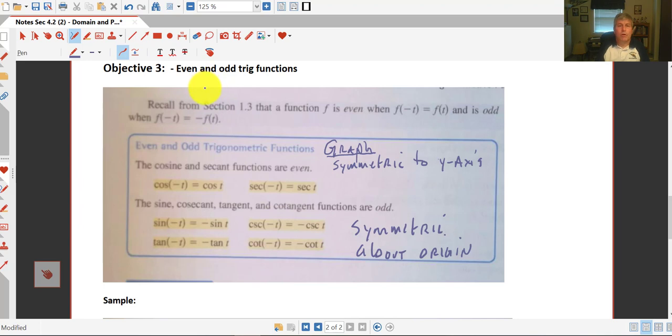Objective 3, we're going to take a look at even and odd trig functions here. And we're just going to give it to you. Just recall that a function is even when f of the opposite of t equals f of t. An even function we may remember had all those even exponents. Those even exponents took our negative input and made them positive. So even when f of negative t equals f of t, or when f of the opposite of t equals the opposite of f of t.